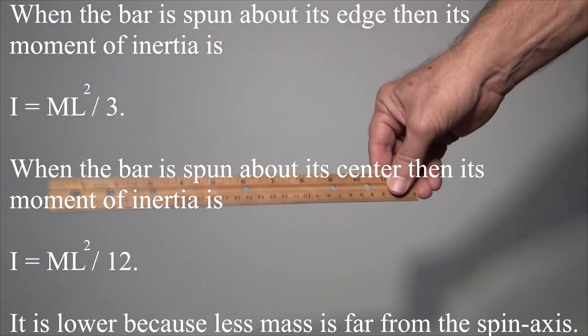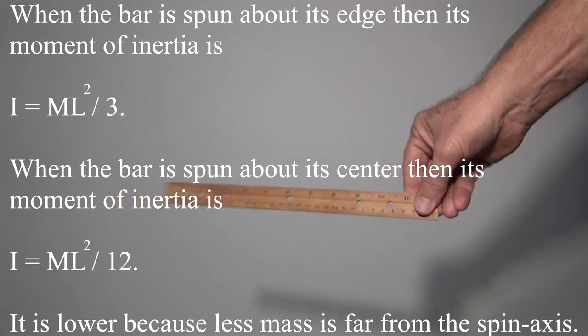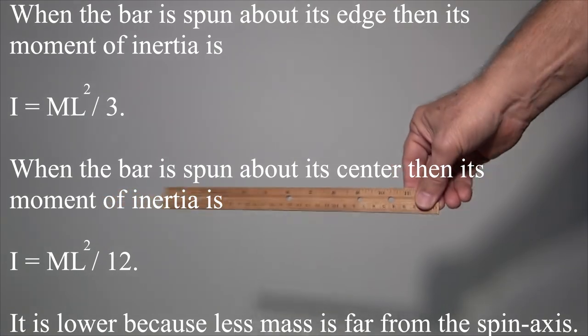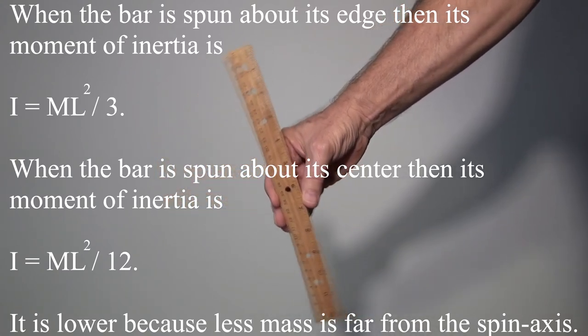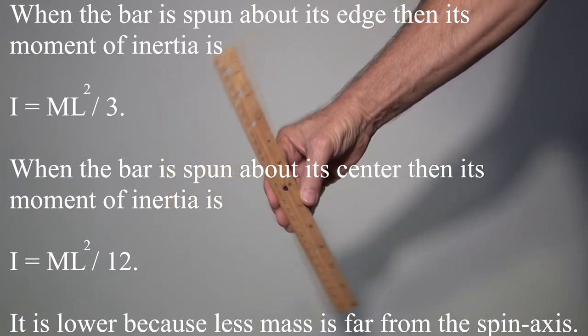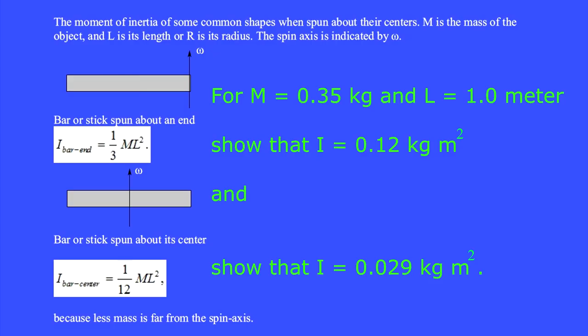When the bar is spun about its edge, then its moment of inertia is I equals 1 third ml squared. When the bar is spun about its center, then its moment of inertia is I equals 1 twelfth ml squared. It is lower because less mass is far from the spin axis. For m equal 0.35 kg and l equal 1.0 m, show that when spun about the end, the moment of inertia is I equals 0.12 kg m squared.